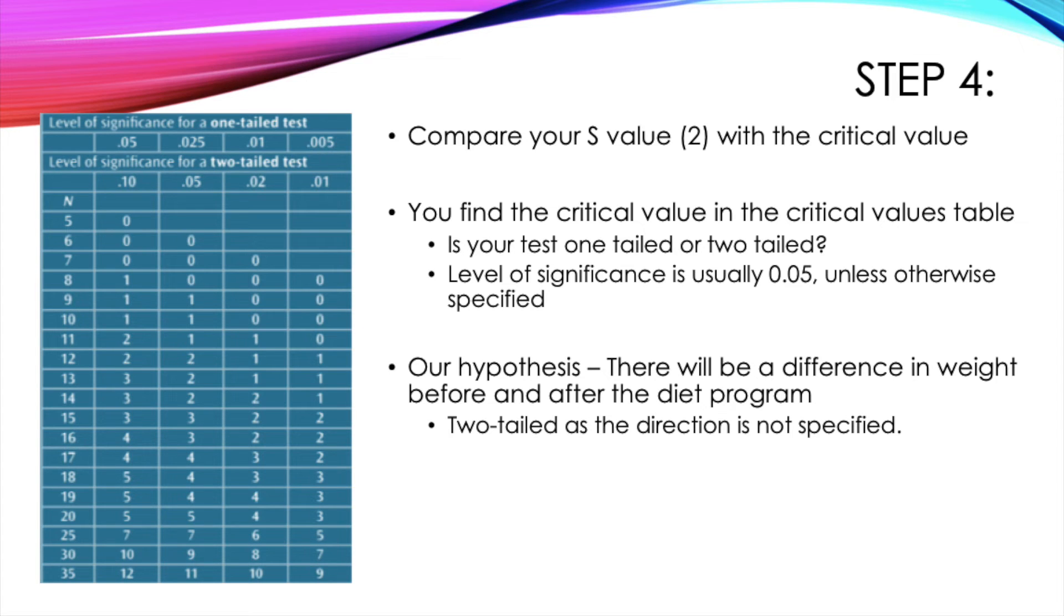In order to find your critical value from the critical values table, you need to know a few things. First, you need to know whether your test was one-tailed or two-tailed. You also need to know the level of significance. In psychology, we always assume that this is 0.05 unless otherwise specified.